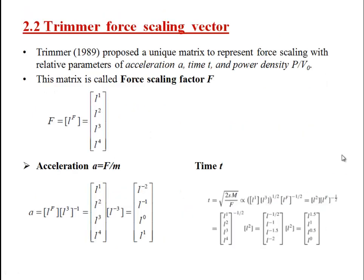Trimmer proposed a unique matrix to represent force scaling with respect to certain parameters such as acceleration, time, and power density. This was proposed by Trimmer in 1989. The force scaling vector is defined as F = L^f, where f takes integer values L¹, L², L³, L⁴.